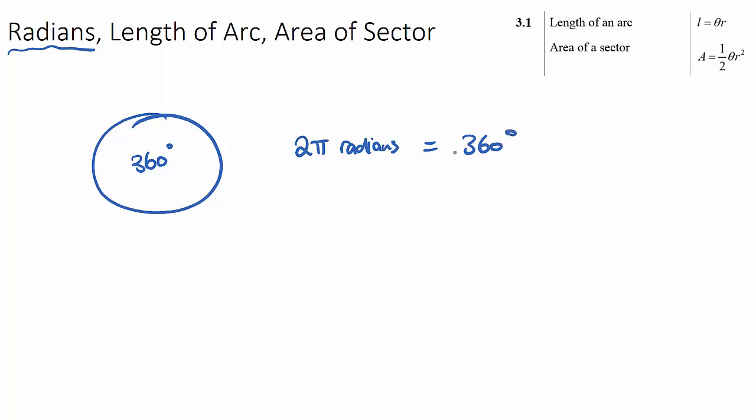This is just two different ways of measuring an angle. Now, radians are actually a lot older than degrees, and they actually make a lot more sense when we use sectors of circles.